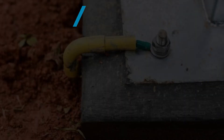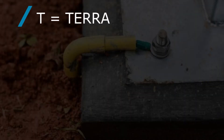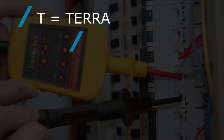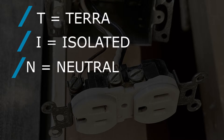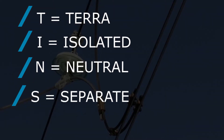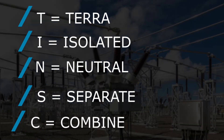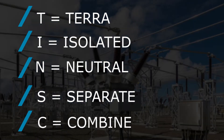But what do all these letters even mean? We're going to explain that now. T is the direct connection to the earth — T stands for the Latin word terra, which means earth. I is isolated, N is neutral, S is separate, and C is combined. Now we know what all the letters stand for, but how do they combine together? The first letter of each system refers to the power source from a star-connected winding. The second letter refers to the consuming equipment that needs to be earthed.